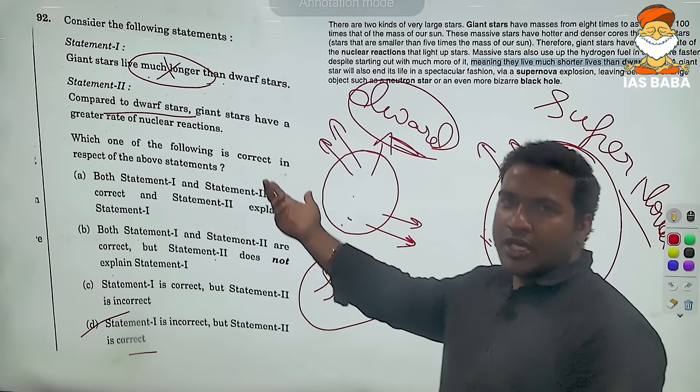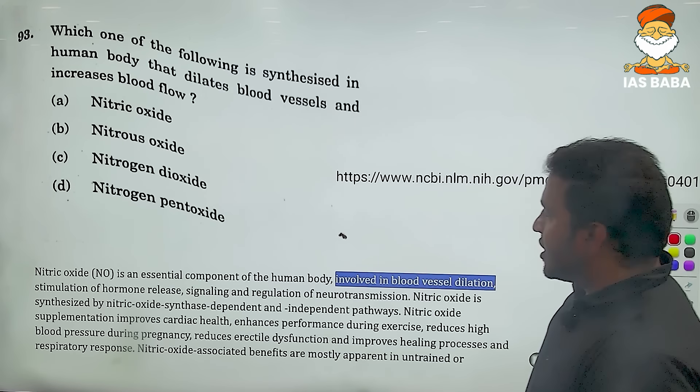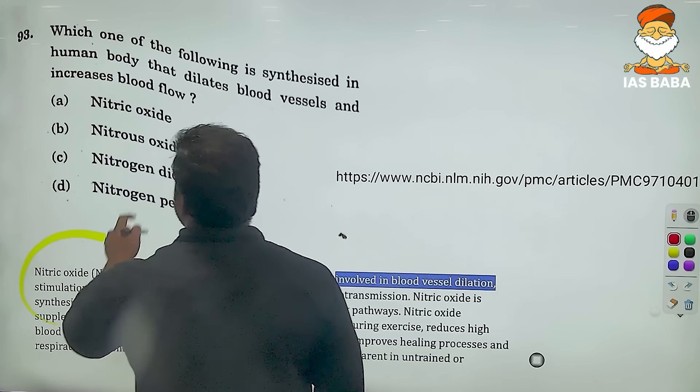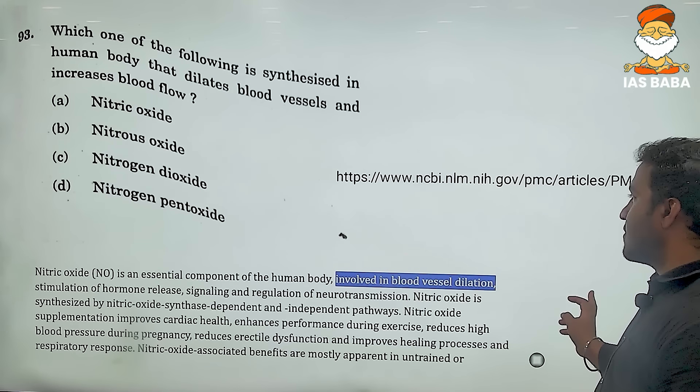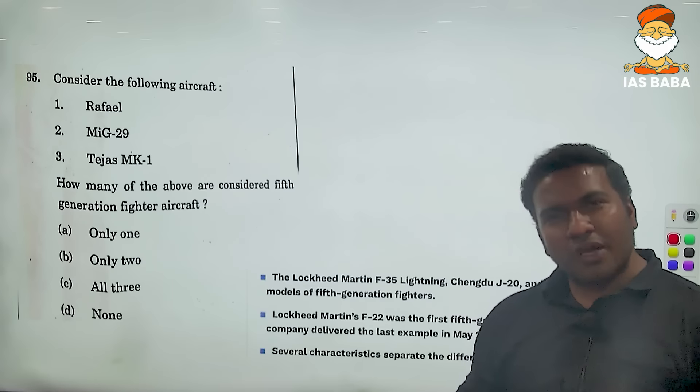Nitric oxide is used because in the current era of increasing heart attacks, blood vessels get clogged by excess fat and cholesterol. Nitric oxide is used to dilate blood vessels and give temporary relief to heart patients — it acts as an instant relief mechanism. Even if you leave this question, it is not an issue. But the answer is nitric oxide — it is used in medical contexts to relieve heart patients whose blood vessels are blocked.